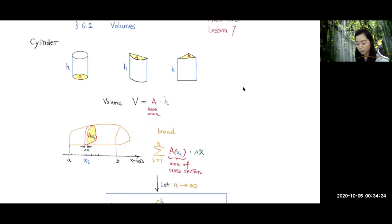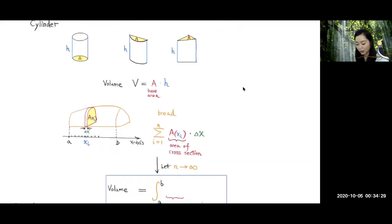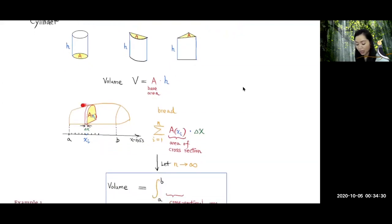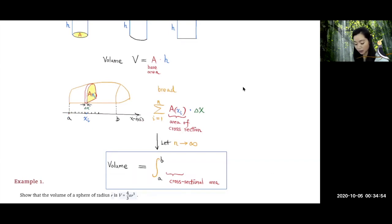Now over here we have a loaf of bread. So how can we find the volume for this? We can slice this up into very thin slices, each one with thickness delta x. So we divide this interval from A to B into n subintervals, each with equal width delta x.